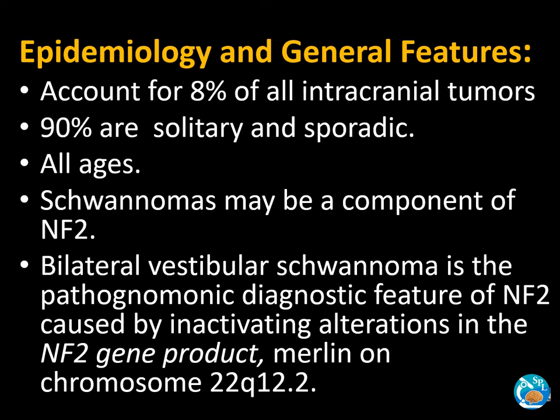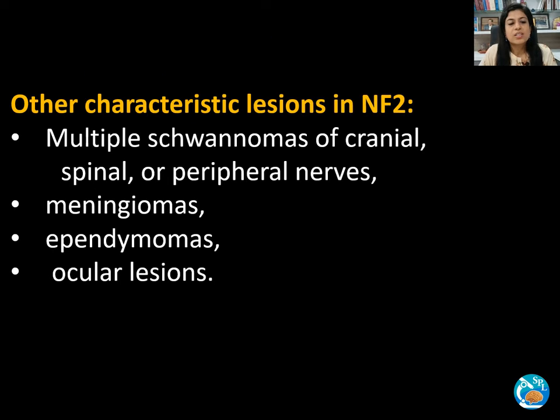These may occur at all ages and there is no particular sex predilection. Schwannomas may be a component of NF2. Bilateral vestibular schwannomas is a pathognomonic diagnostic feature of neurofibromatosis 2, caused by inactivating alteration of the NF2 gene product Merlin on chromosome 22q12.2. Other characteristic lesions frequently encountered in NF2 are multiple schwannomas, meningiomas, ependymomas, and ocular lesions. However, a population-based study revealed that such lesions do not develop in all NF2 cases — 41% lack the above features — and other diagnostic criteria become essential to prove a case of NF2.